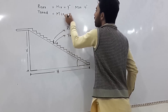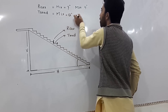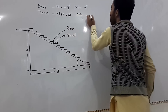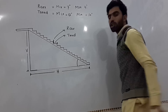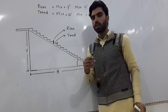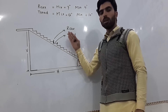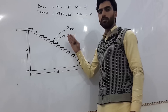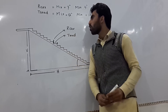Now, what about the tread? The maximum tread will be 12 inches and the minimum will be 10 inches. Keep this in mind when you do the design for the stair.